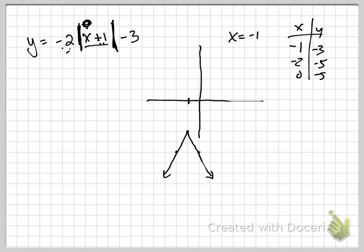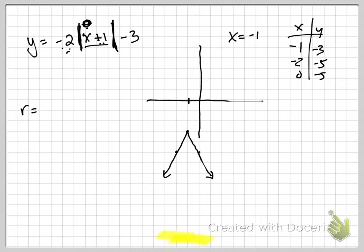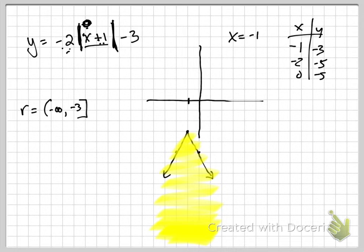See how nice and easy that is to graph? Domain is still negative infinity to positive infinity. Range: the smallest number goes first. Where does this graph go to and where does it stop? Negative infinity or negative 3 — negative infinity is smaller so it goes first. So I go from negative infinity to negative 3, including negative 3.